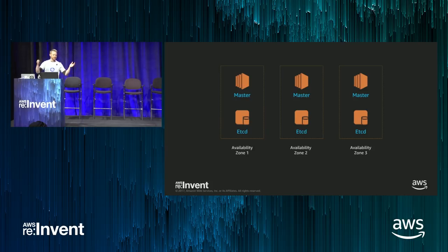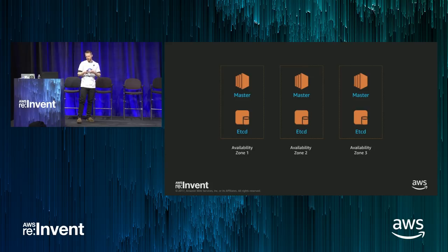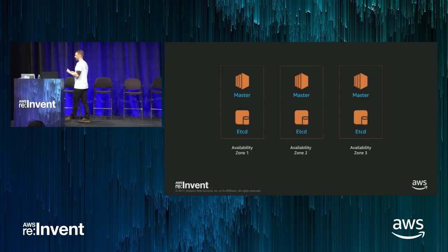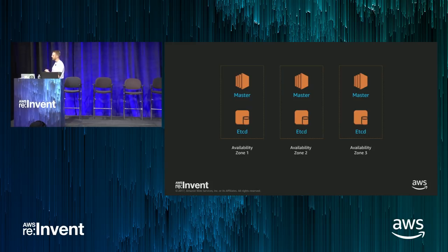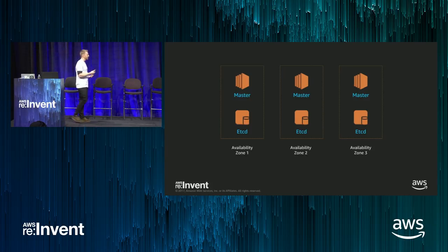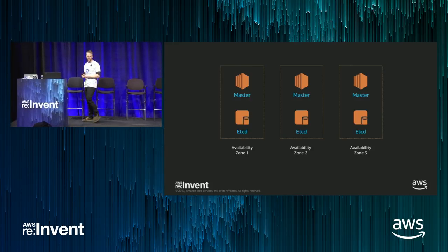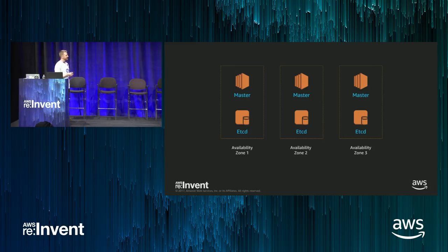In addition to the masters, you also need to run etcd, which is the core persistence layer for Kubernetes — this is where all the critical data for your cluster lives. If you lose your etcd cluster, you can probably have a bad night. One decision you have to make is whether to run three individual masters and three individual etcd nodes, or co-locate them on the same three instances. This is a trade-off in terms of operational burden, especially when you upgrade Kubernetes.